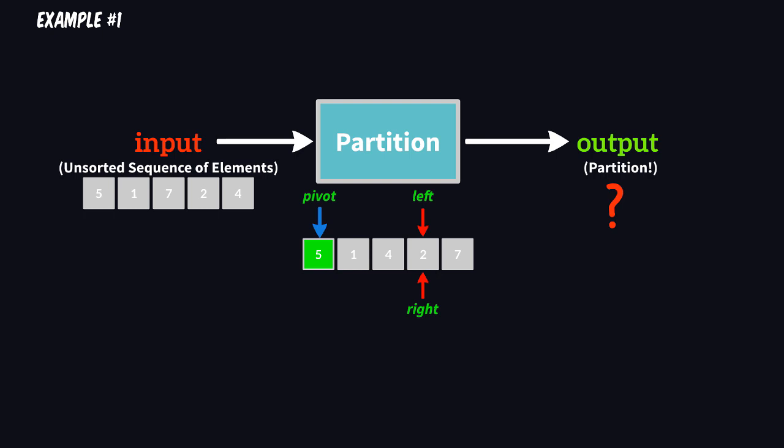And now, as the final step of the partition algorithm, all that remains is just to make a swap between the pivot and the element pointed by the right cursor, which is, in our case, two.